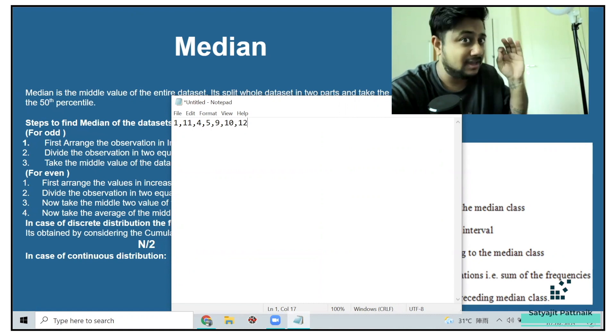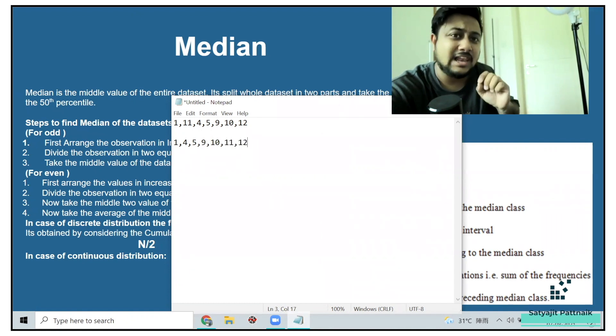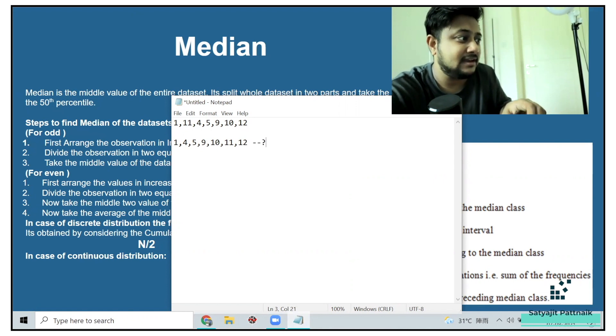So first step is going to be sorting. So if we sort it, it will be like 1, 4, 5, 9, 10, 11, 12. How many elements do we have here? We have seven elements. The middle element is nine. So here the median is going to be nine.